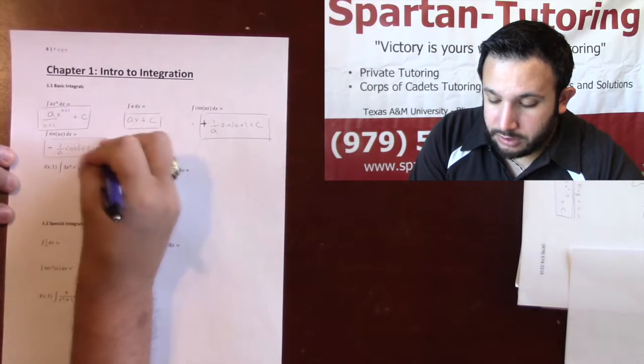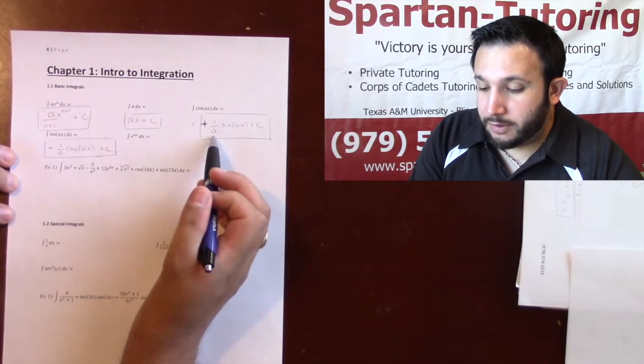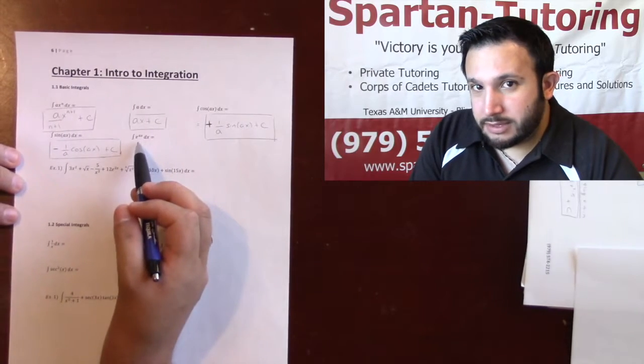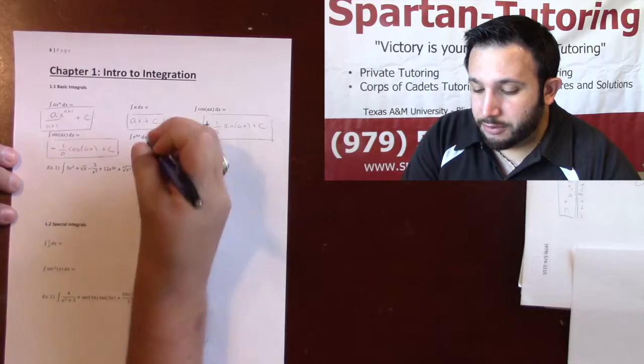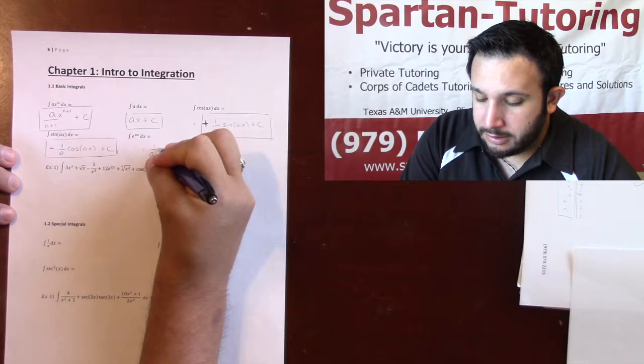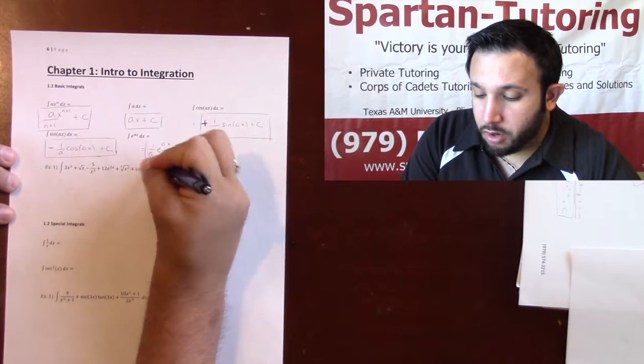Finally, notice with the e, notice how whenever you have a number on the inside, I keep dividing by that number. Same principle here. If I have e to the ax, then the anti-derivative of this will be 1 over a e to the ax. Plus c. So I know that this is arbitrary.